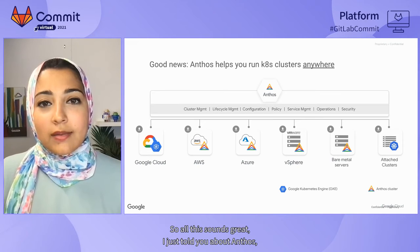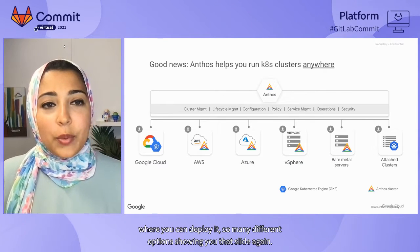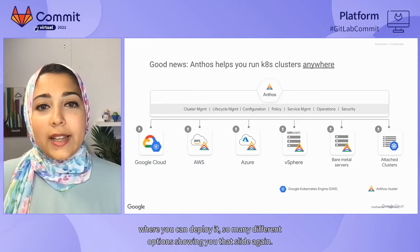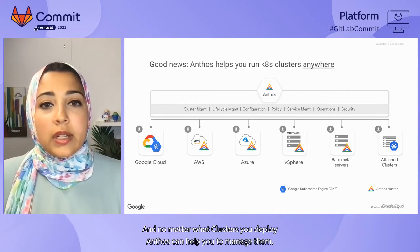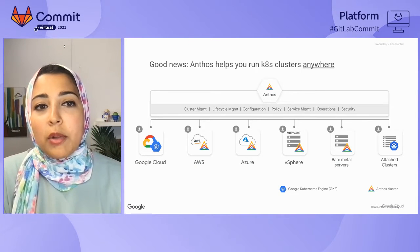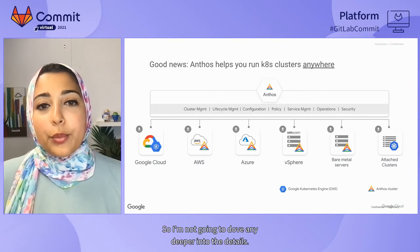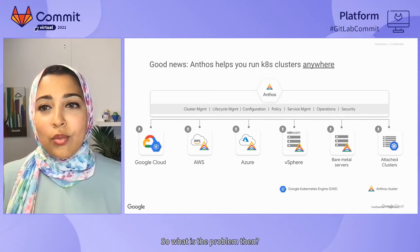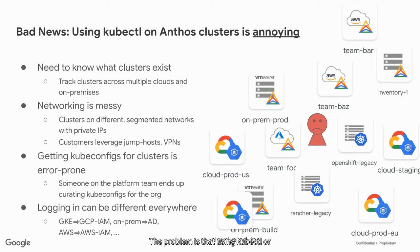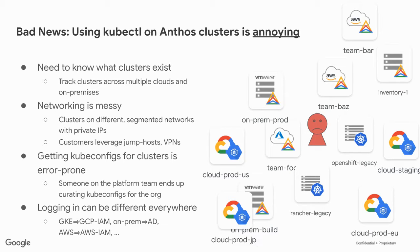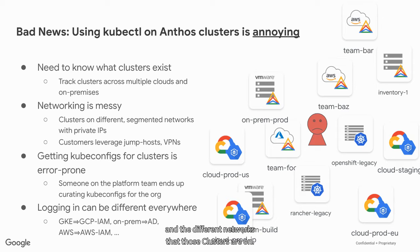So all this sounds great — I just told you about Anthos, where you can deploy it, so many different options. And no matter what clusters you deploy, Anthos can help you manage them. So what is the problem then? The problem is that using kubectl, or any client tooling for that matter, on these Anthos clusters is annoying. And this is not a problem unique to Anthos — it's just the nature of the different clusters, different cloud providers, and different networks.